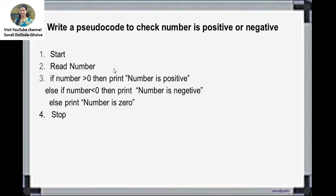Here we are writing the pseudocode — it is like an algorithm but not exactly. The first step is START. Then READ the number. After this, the third step is: IF number > 0, THEN print 'number is positive'. ELSE IF number < 0, THEN print 'number is negative'. Here we are using IF-THEN-ELSE.